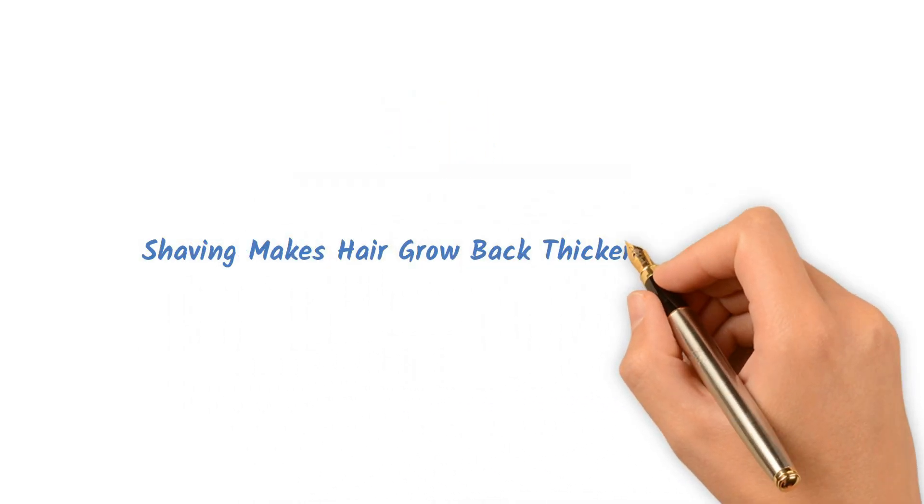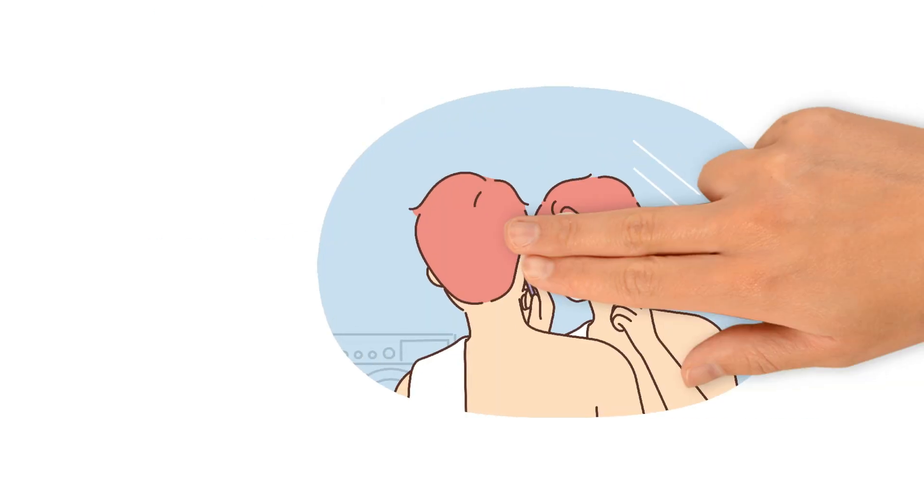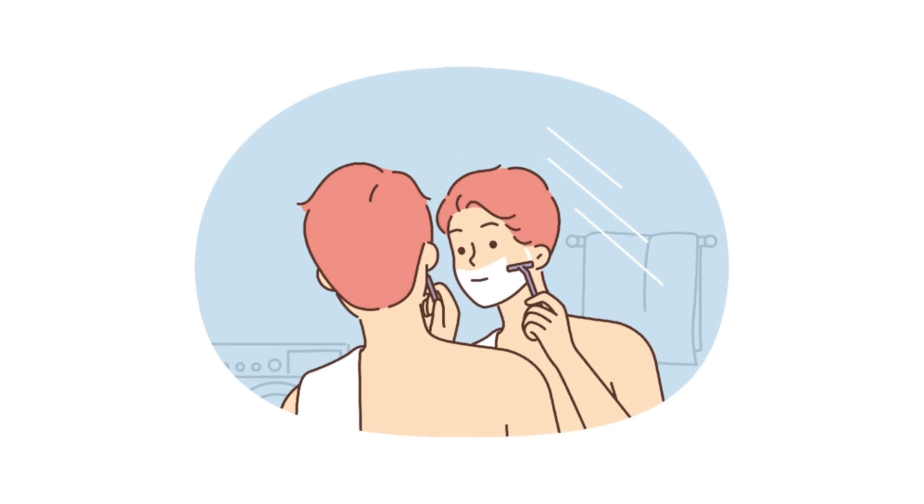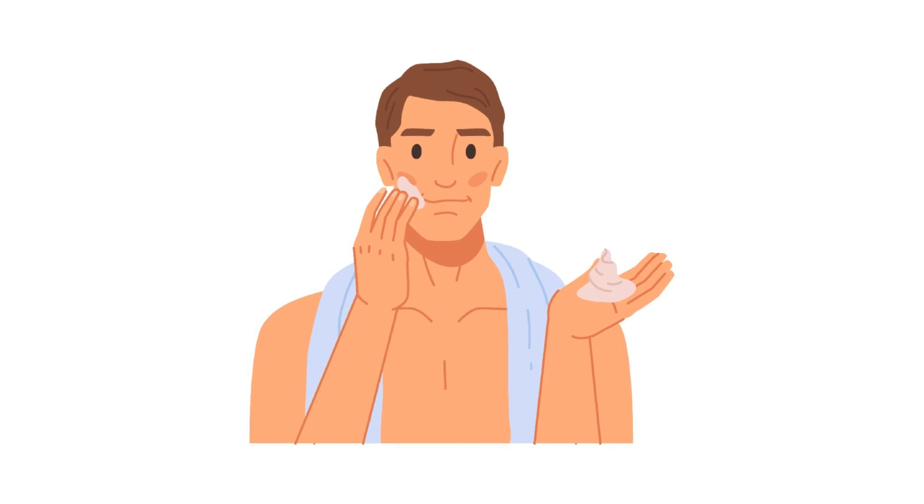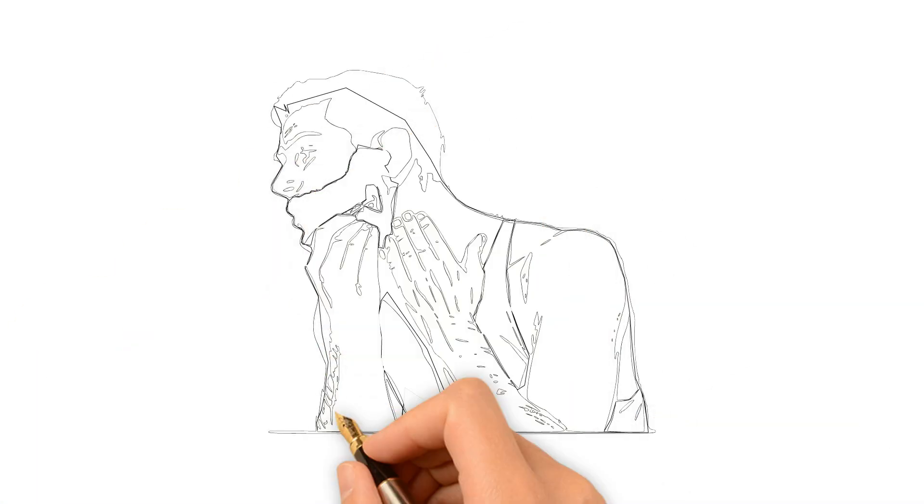Shaving makes hair grow back thicker and darker. Hair grows at the same rate and thickness regardless of shaving. The stubble might feel coarser initially, but that's just the new hair growth with a blunt tip. Shaving has no effect on the hair follicle itself.